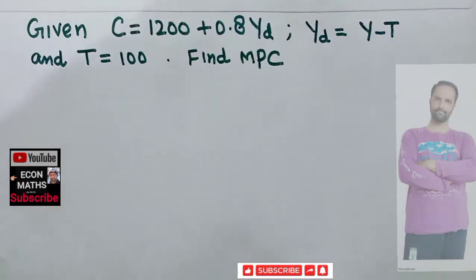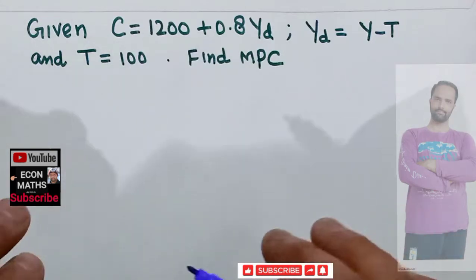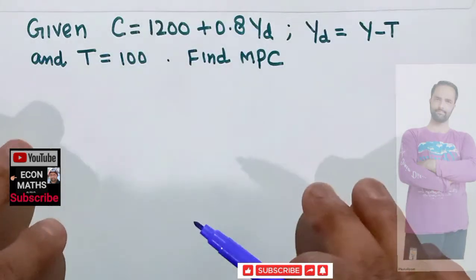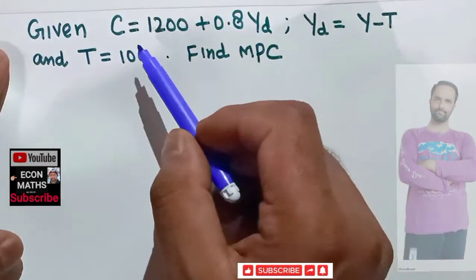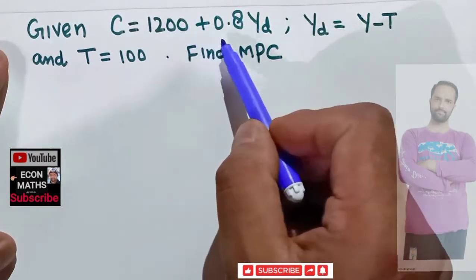In this video we will solve a question on how to find the marginal propensity to consume from the given consumption function and lump sum tax. The question is: given consumption function is C equals 1200 plus 0.8 Y subscript d.